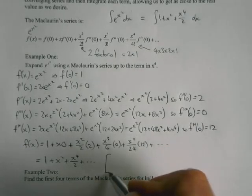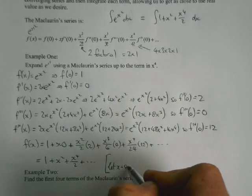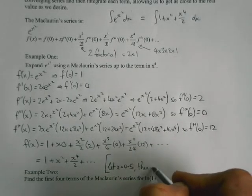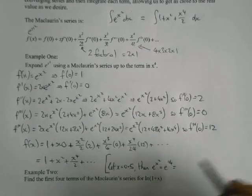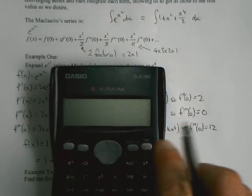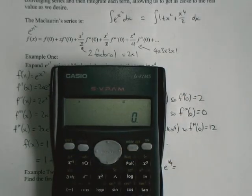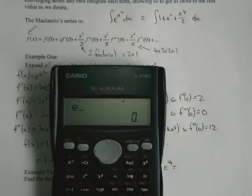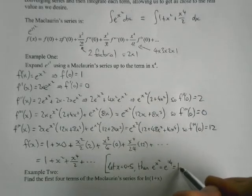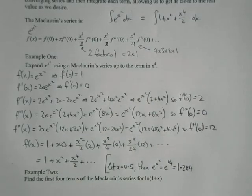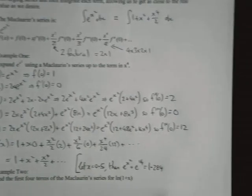So instead of dealing with e to the power of x squared, we can deal with this expression. And just to convince you that it's actually right, let's try evaluating them. We'll just pick a value. We'll say let x equal 0.5. Then e to the x squared, 0.5 squared is a quarter. And e to the power of a quarter, if we whip out the calculator, e to the power of, oh, that's natural log, shift, e to the power of a quarter is 1.284.